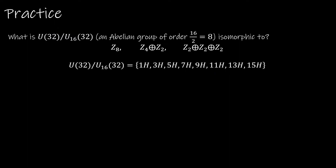The question is which one, and how do we know? This puts together a lot of things from Chapter 4 on cyclic groups. Z8 is cyclic, whereas Z4×Z2 and Z2×Z2×Z2 are not, because 4 and 2, or 2, 2, and 2, are not relatively prime.